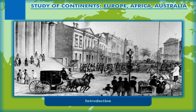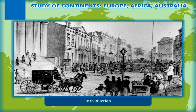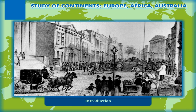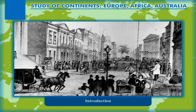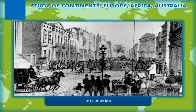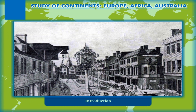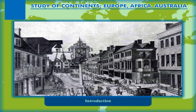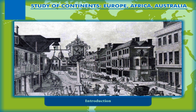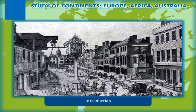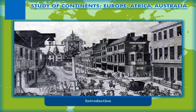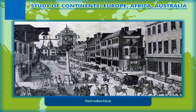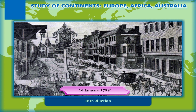For about 50,000 years before the first British settlement in the late 18th century, Australia was inhabited by indigenous Australians who spoke languages classifiable into roughly 250 groups. After the European discovery of the continent by Dutch explorers in 1606, Australia's eastern half was claimed by Great Britain in 1770, and initially settled through penal transportation to the colony of New South Wales from 26 January 1788.